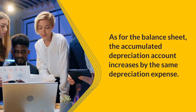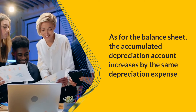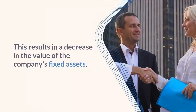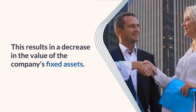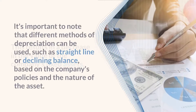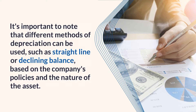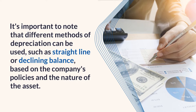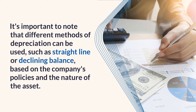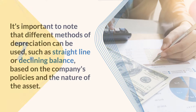As for the balance sheet, the accumulated depreciation account increases by the same depreciation expense, resulting in a decrease in the value of the company's fixed assets. It's important to note that different methods of depreciation can be used, such as straight-line or declining balance, based on the company's policies and the nature of the asset.